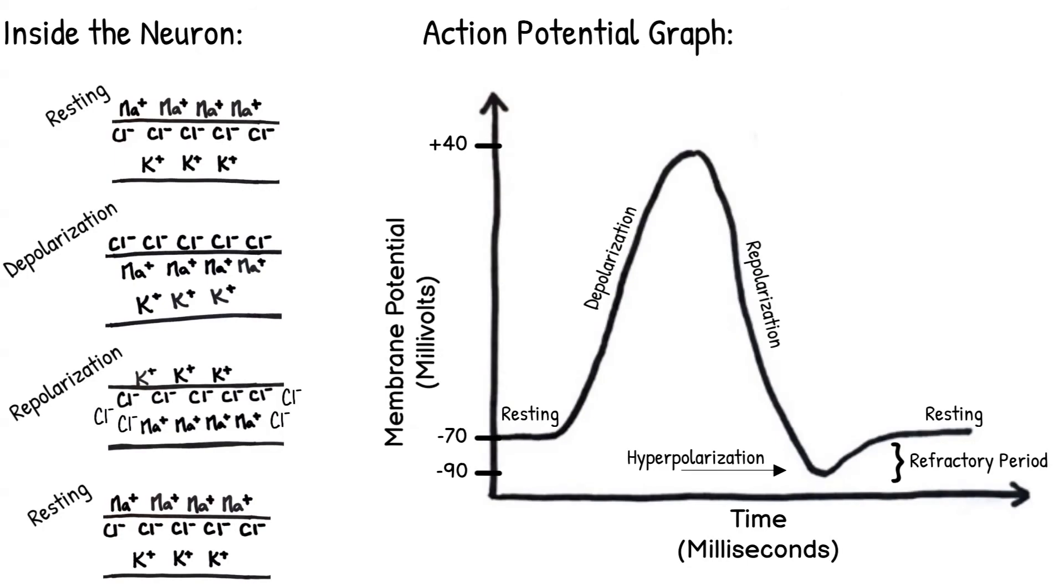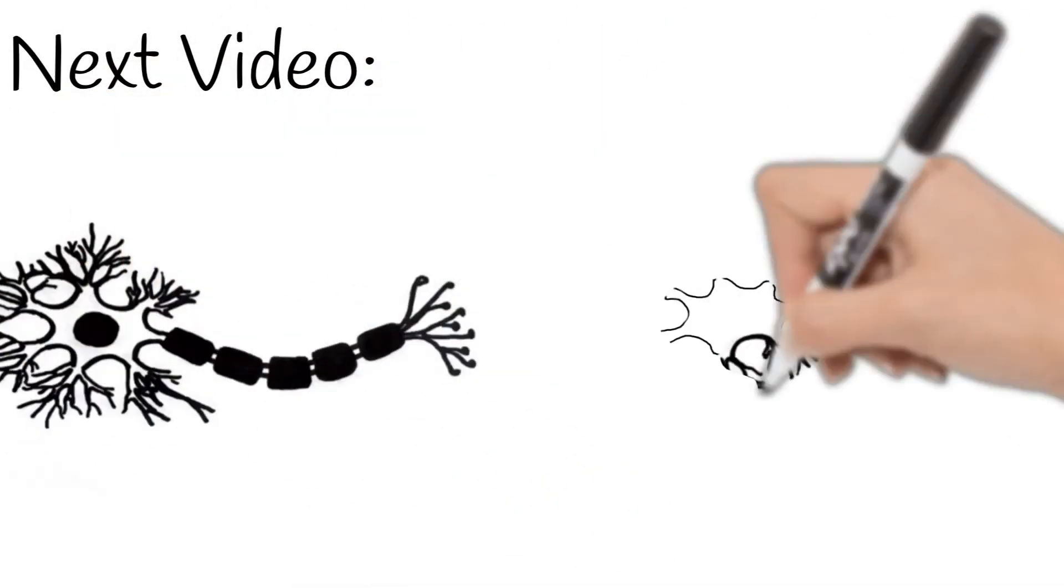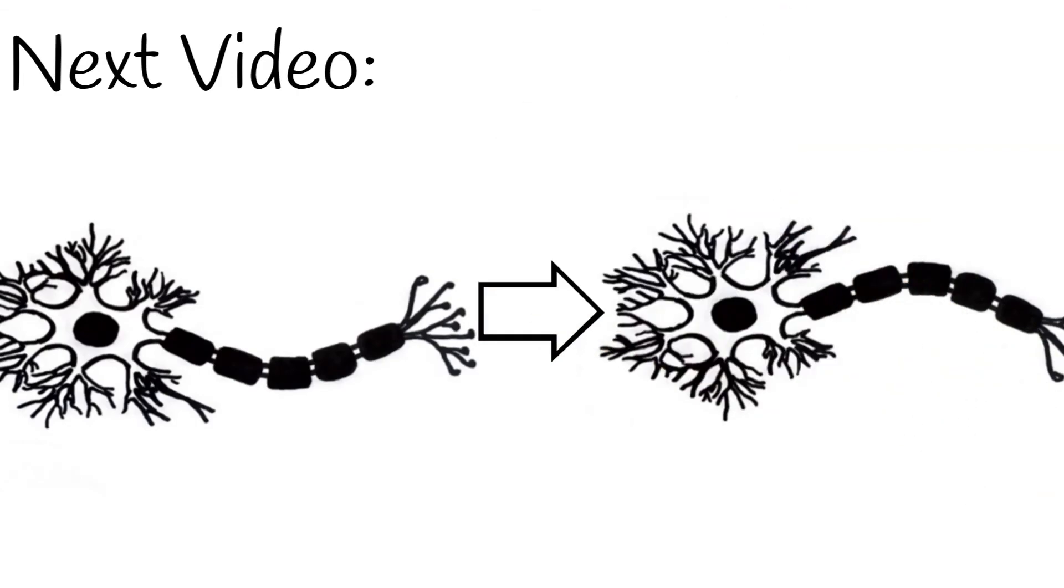Action potentials can be difficult to process. Hopefully this video and the diagrams have helped you learn. Look for our next video all about how those messages pass between neurons.